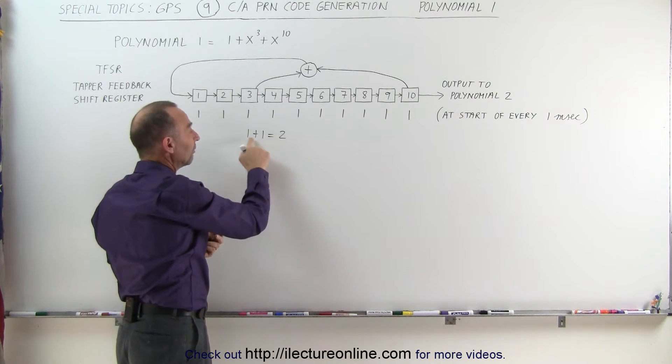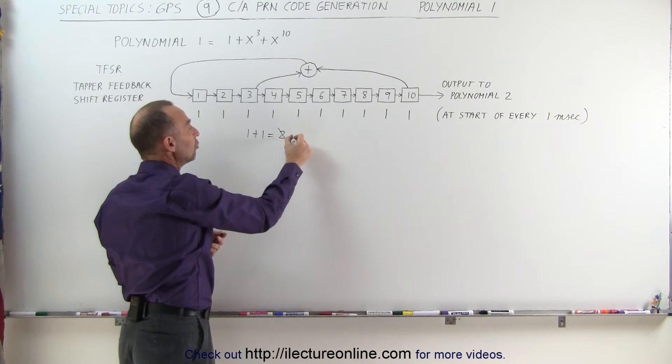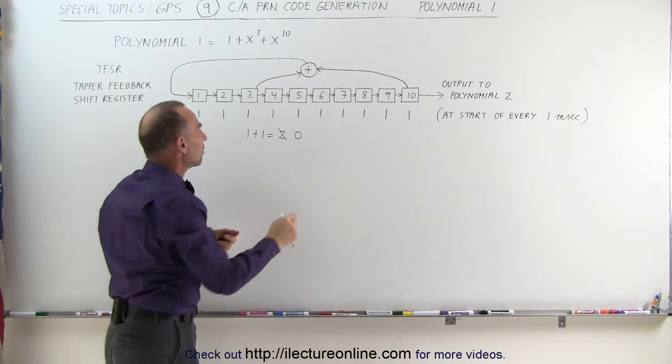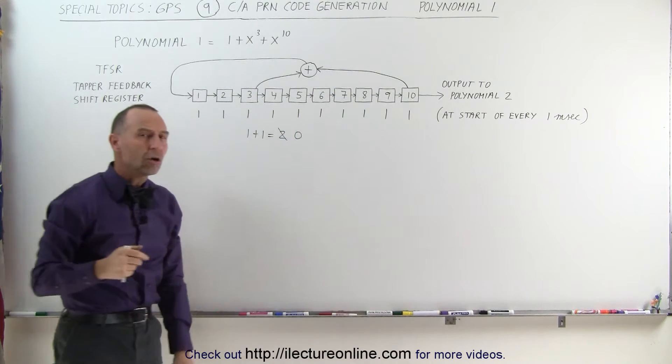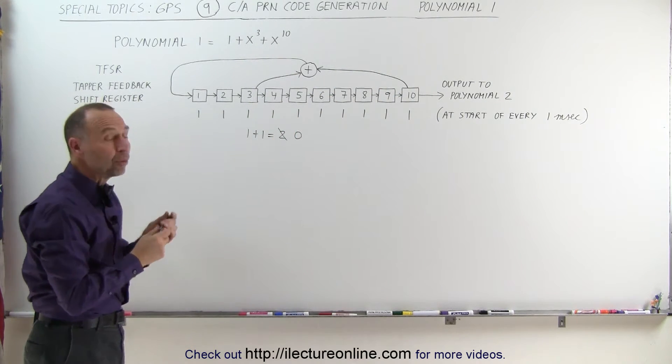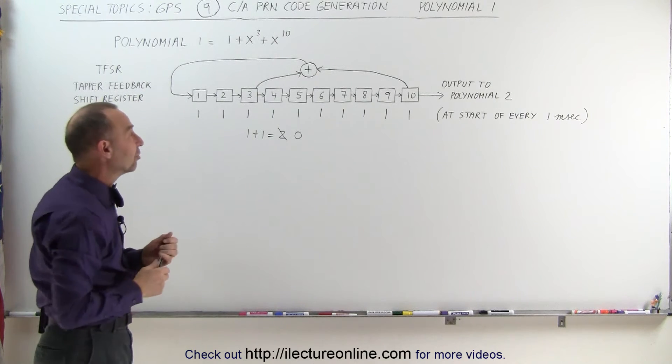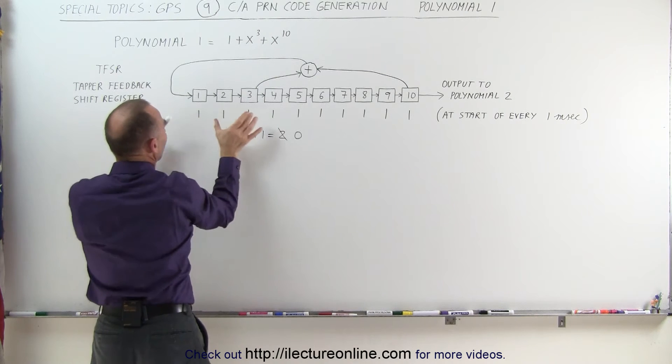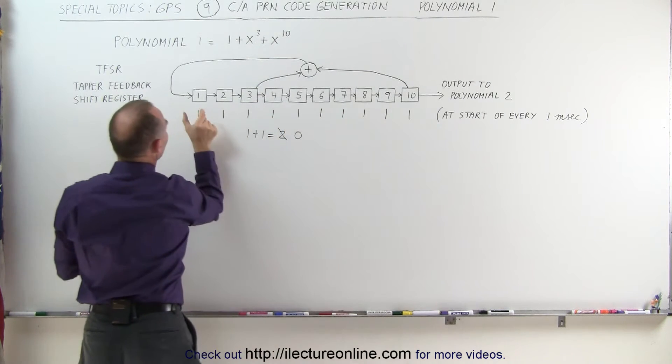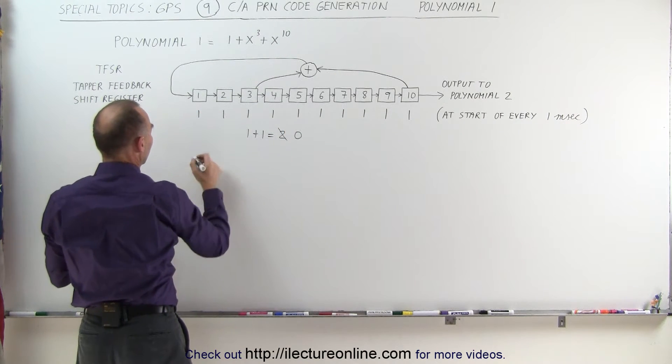Therefore, when we sum 3 and 10 together, we get a 0. It's called the XOR process and that means that if they're both equal to 1, we actually end up with a 0. That 0 then gets fed in, replaces this one here, everything will shift over one spot and we'll get a 0 here on the next iteration.